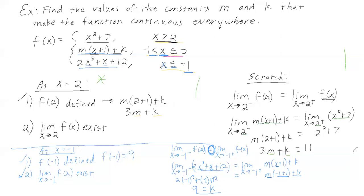For condition 3: is the limit as x approaches -1 of f(x) equal to f(-1)? The left-hand limit is 9, and we forced the right-hand limit to equal 9 as well, so the overall limit is 9. And f(-1) is also 9, so condition 3 checks out.